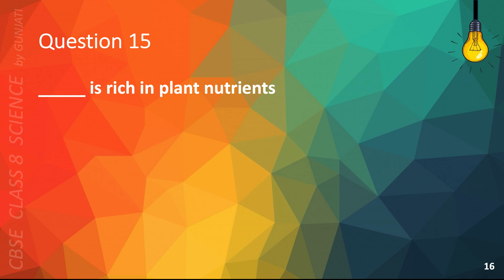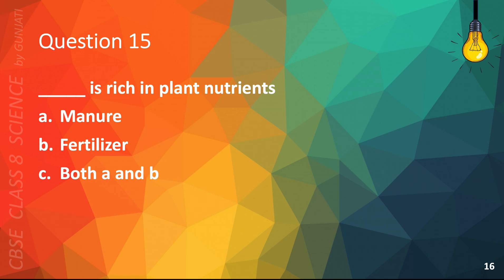Question 15. Blank is rich in plant nutrients: A. Manure, B. Fertilizer, C. Both A and B, or D. None of the above. The correct answer is B. Fertilizer.